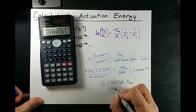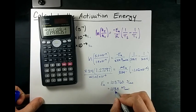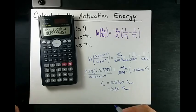This gives me an EA of 103,760 joules per mole, which if I'm going to convert it into kilojoules per mole, divide by a thousand gives me 103.8 kilojoules per mole.